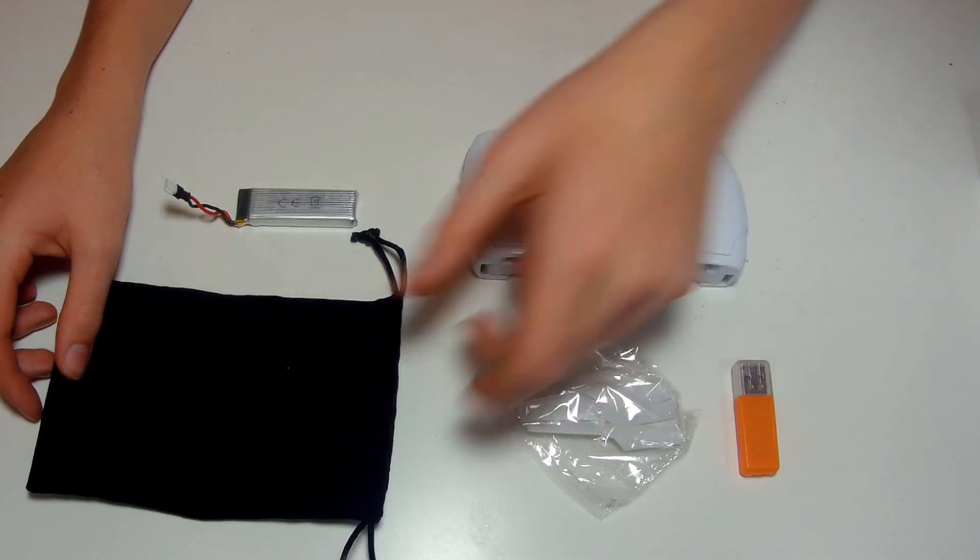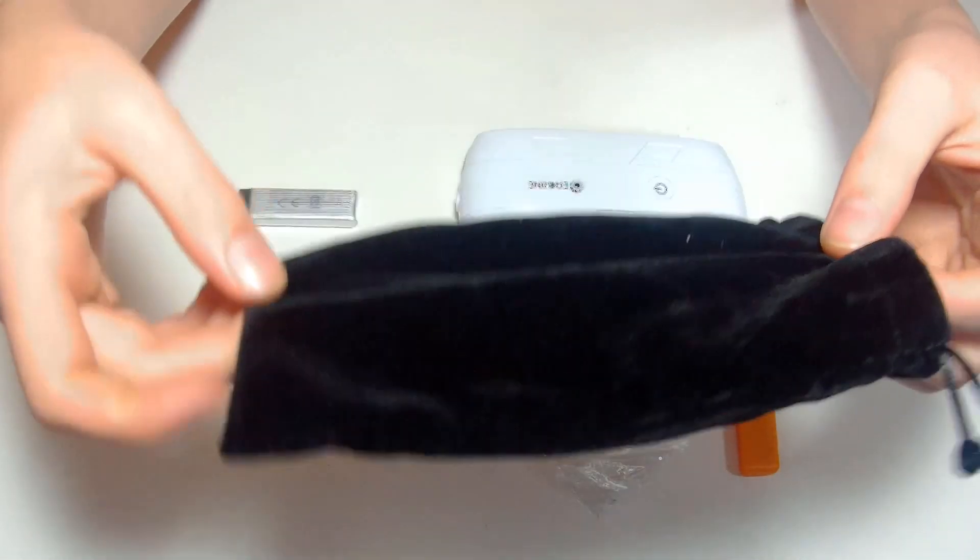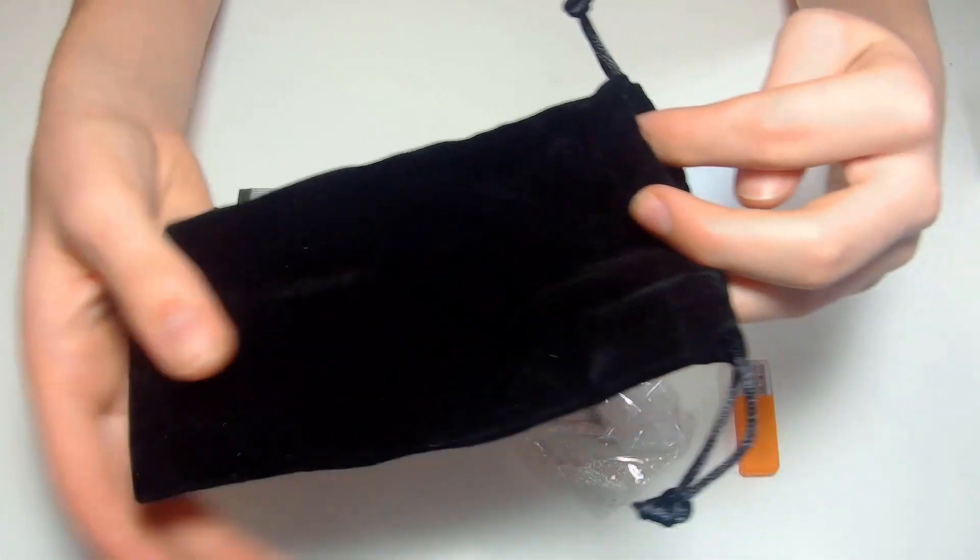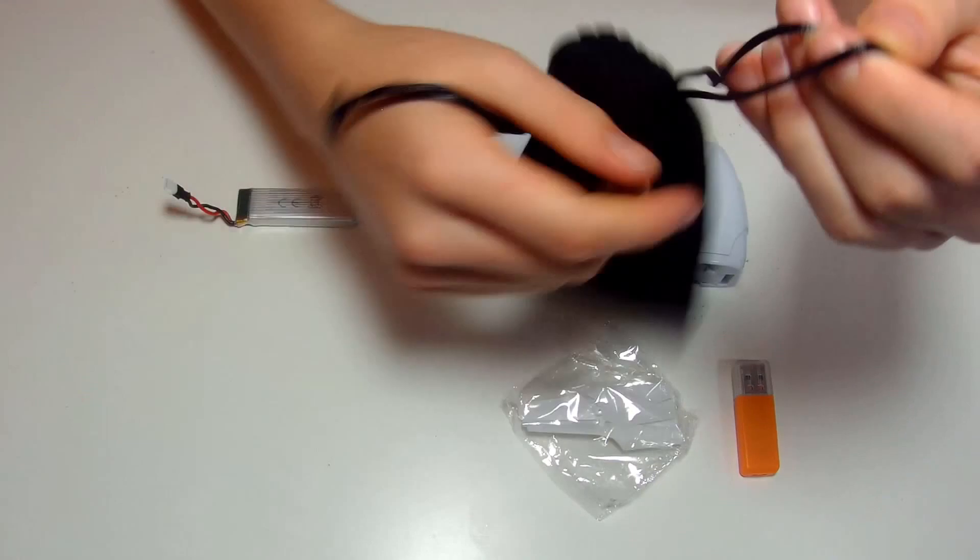In the box you're going to get a nice carry case which will keep the drone and the camera lens protected when it's in your backpack or handbag or whatever. It's a nice felt sort of bag with a pull closed top.